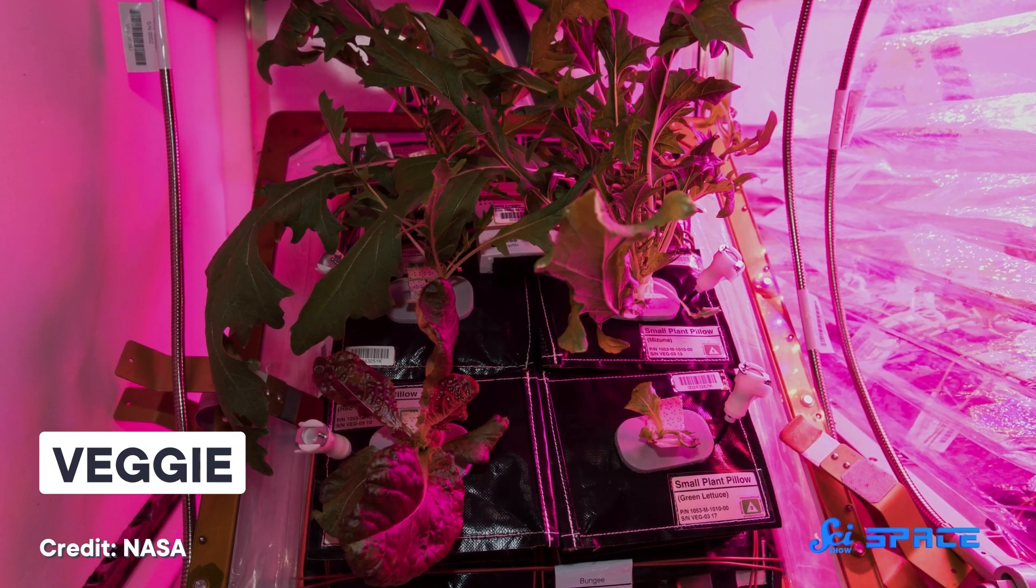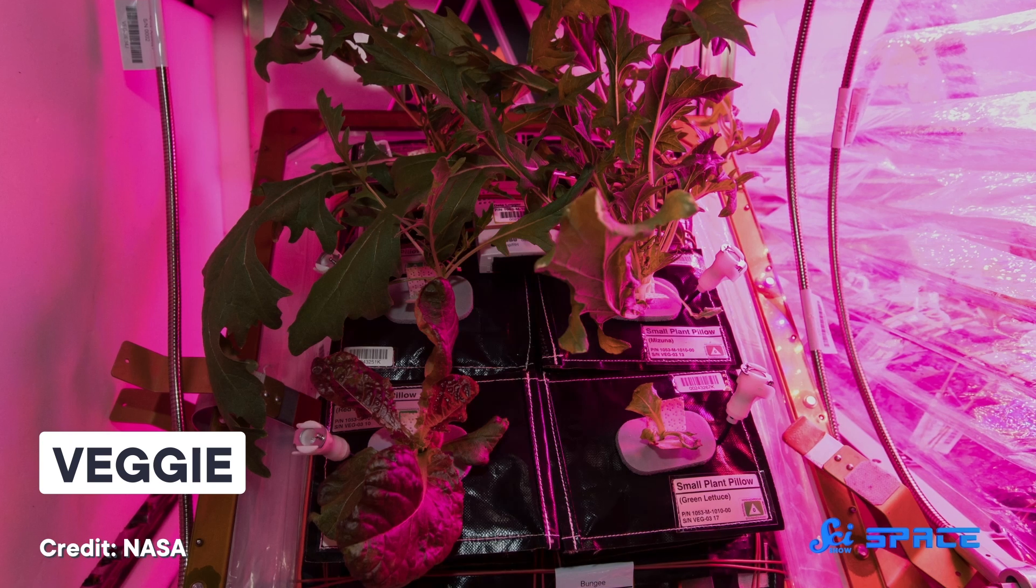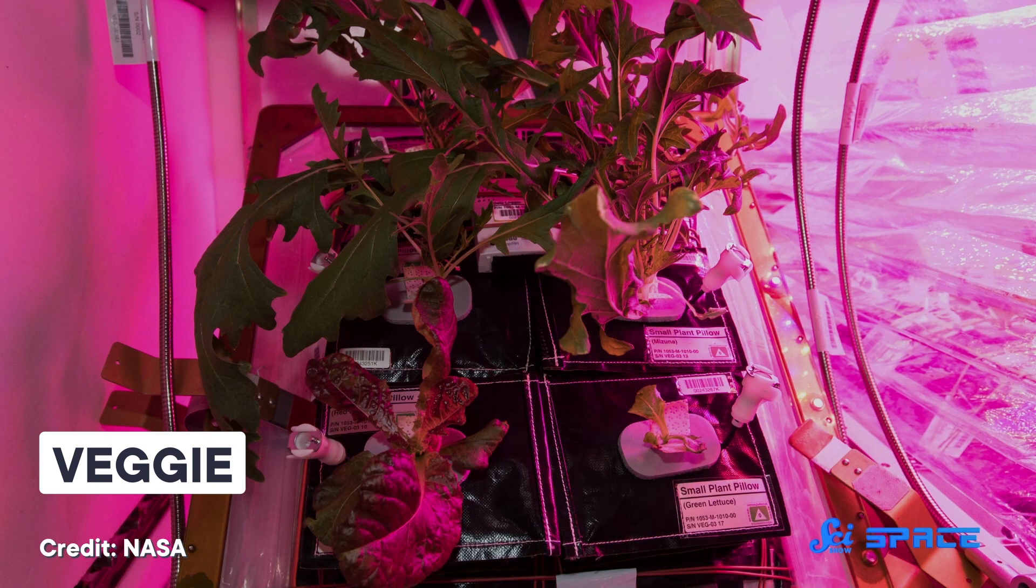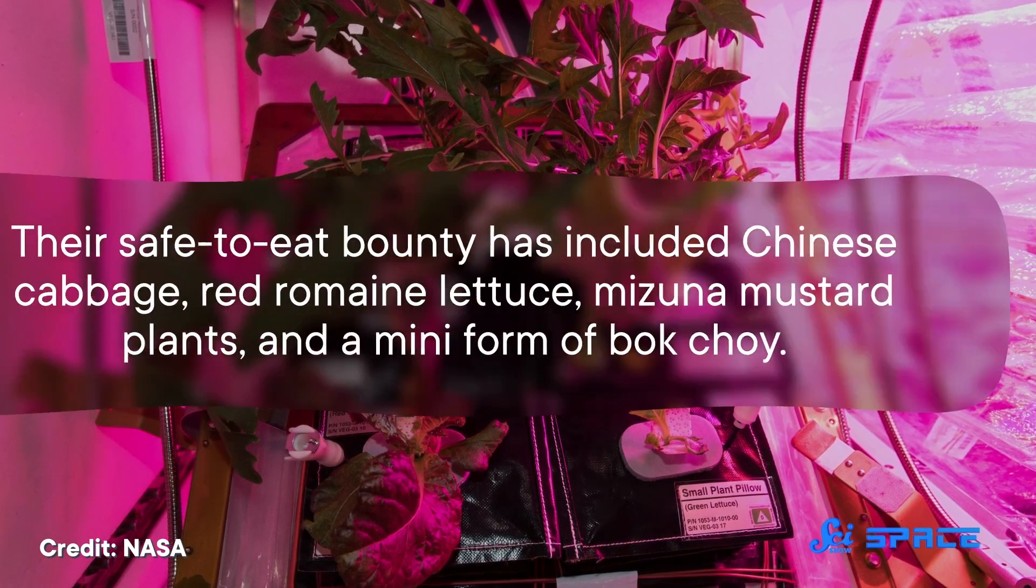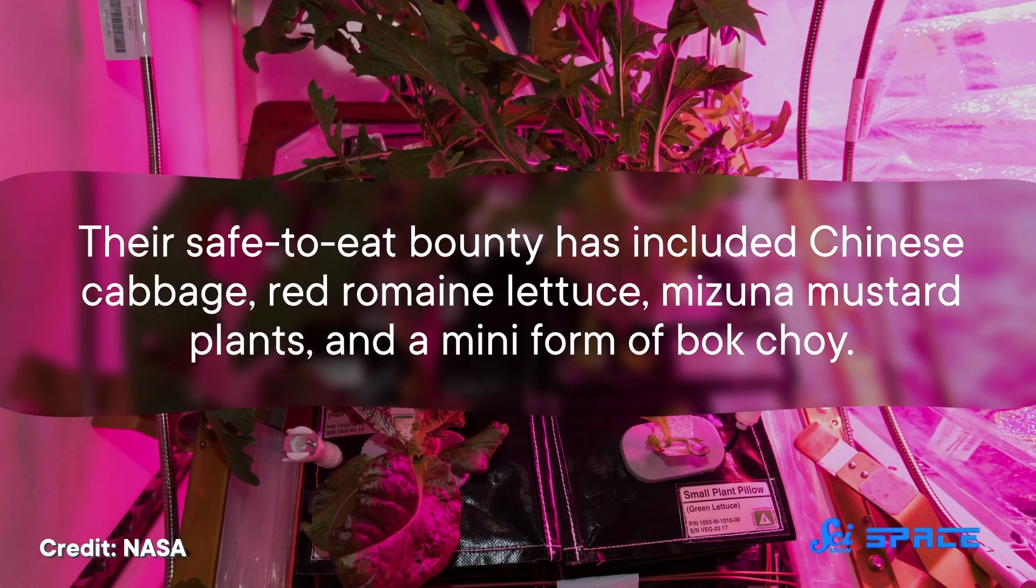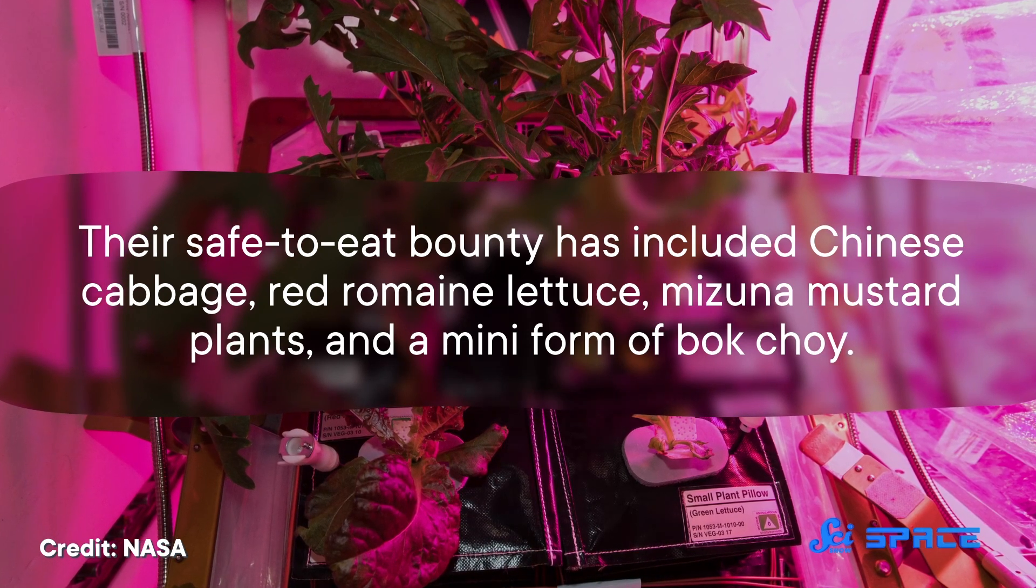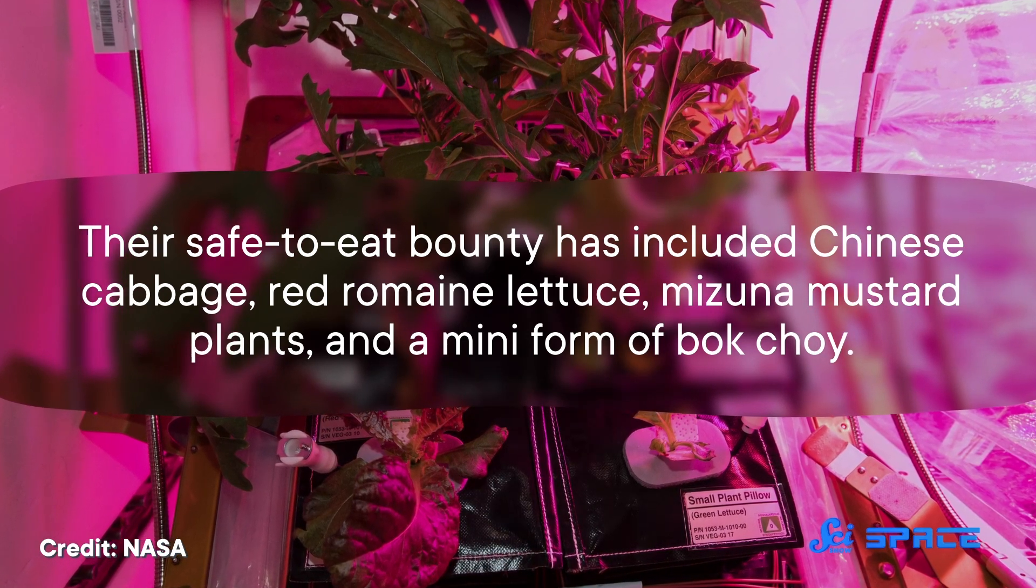But NASA scientists on board the International Space Station have grown a whole host of other foods since then, using their vegetable production system dubbed Veggie. Their safe-to-eat bounty has included Chinese cabbage, red romaine lettuce, mizuna mustard plants, and a mini form of bok choy.